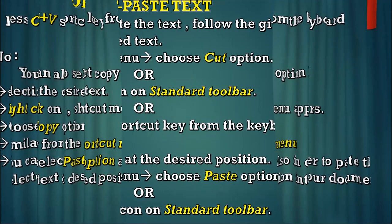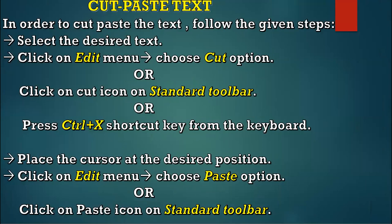Moving to cut-paste: all steps are the same. The only difference is you have to choose the cut option instead of copy. The paste operation is totally the same. Click on Edit menu and choose the cut option, or click on the cut icon on the standard toolbar, or press Ctrl+X shortcut key from the keyboard, or right-click on the selected text and choose the cut option.